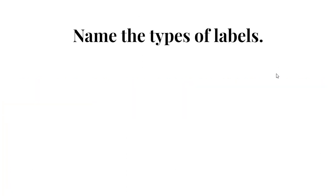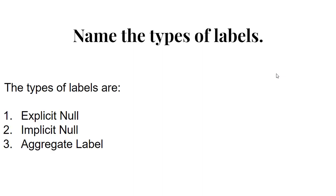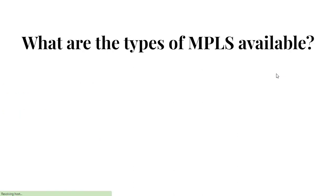Question 5: Name the types of labels. Answer: The various types of labels in MPLS include Explicit Null, Implicit Null, and Aggregate Label.